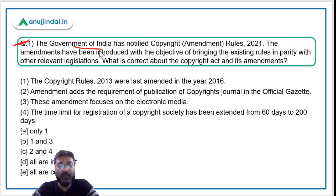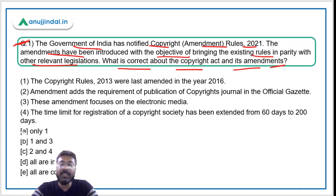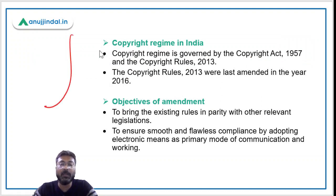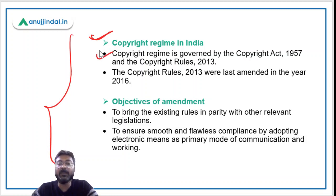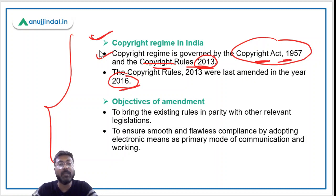Let's begin with the first question. The Government of India has notified Copyright Amendment Rules 2021. The amendments have been introduced with the objective of bringing the existing rules in parity with other relevant legislations. Before moving to the amendment rules 2021, let's understand the copyright regime in India. It is covered by the Copyright Act of 1957 and the Copyright Rules 2013, which were last amended in 2016 and now further amended through the Copyright Amendment Rules 2021.